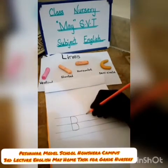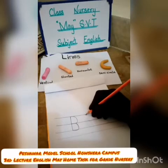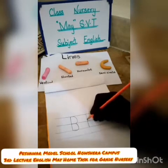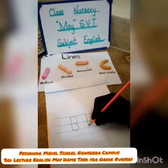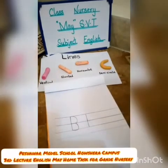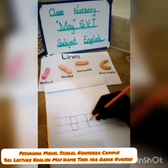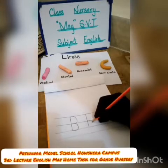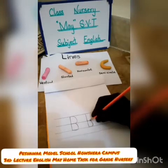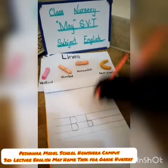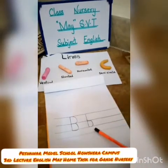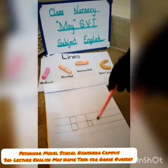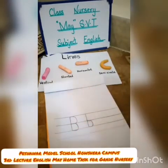Now let's draw the small b. First, draw a vertical line in the upper three lines — one, two, three. Then leave the upper two lines, and draw a semicircle only in the mid two lines. Small b has just one semicircle. It's become a small b.